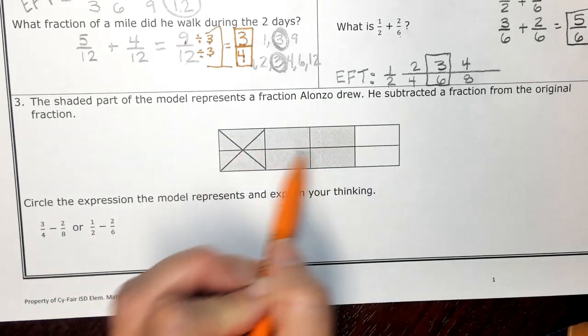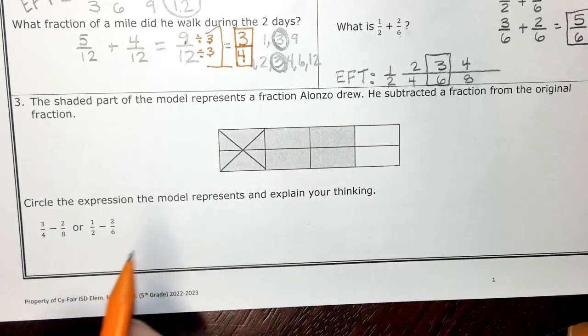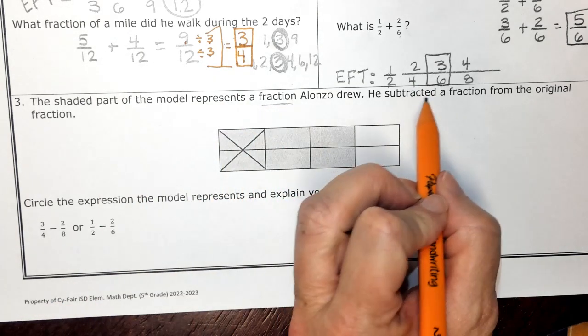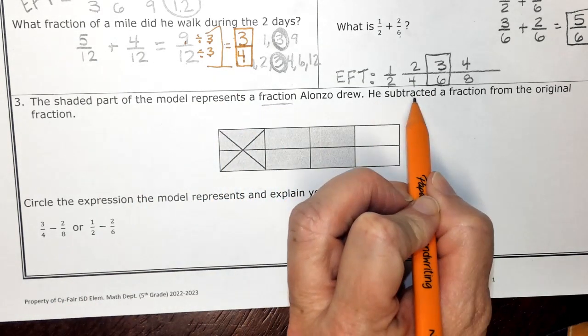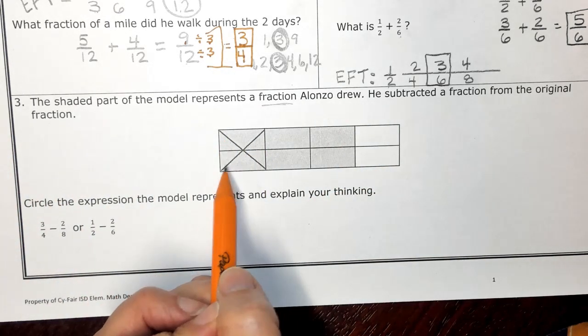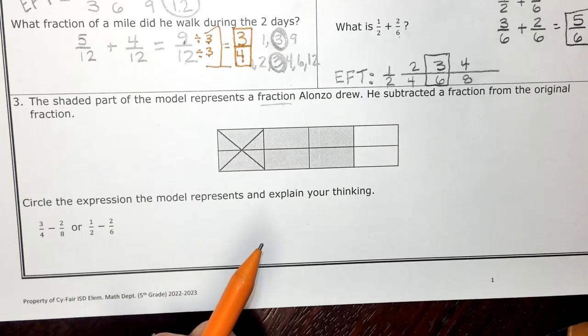I'm also noticing that we've got equal pieces. So I know that I'm going to have some kind of fraction amount. And it also tells me in the story that he subtracted a fraction from the original fraction. So I'm thinking that this X is some kind of part that is subtracted.